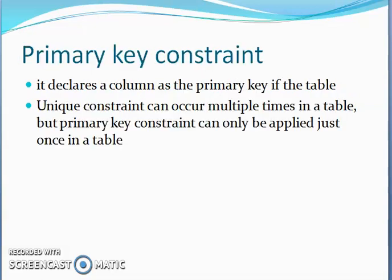Next is primary key constraint. This constraint declares a column as the primary key of the table. This constraint is similar to unique constraint, except that the unique constraint can occur multiple times in a table, but primary key constraint can only be applied just once in a table. Primary keys cannot allow null values, so this constraint must be applicable to columns declared as NOT NULL.